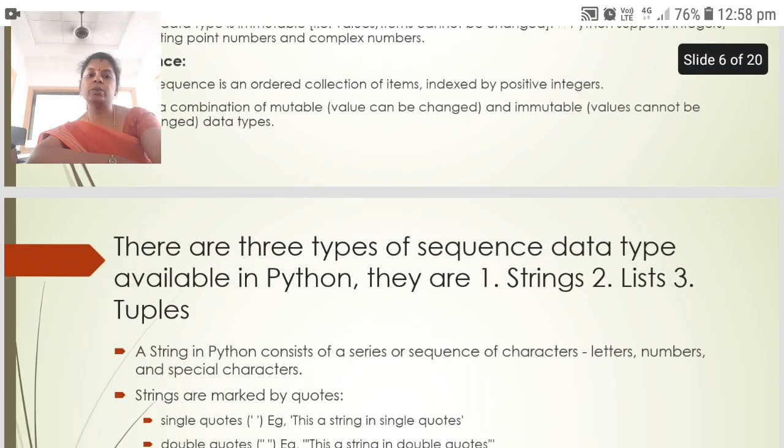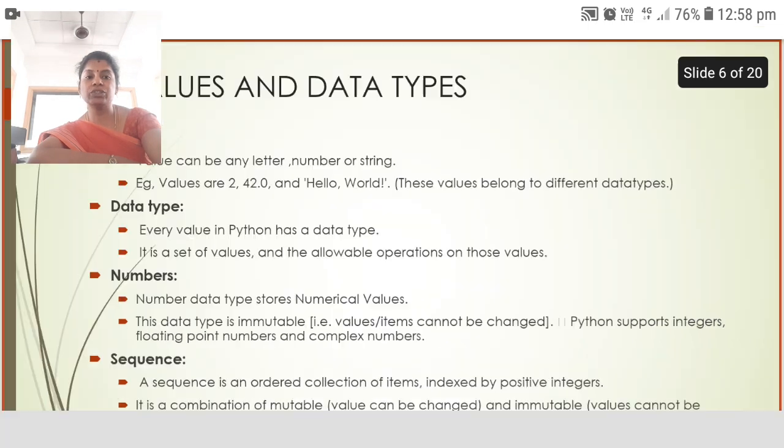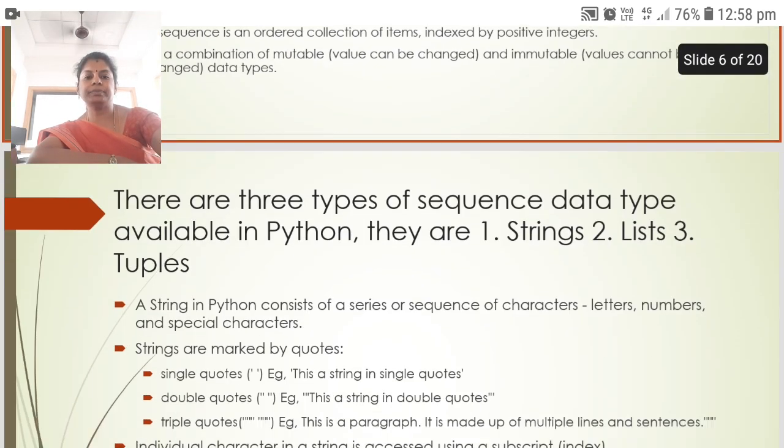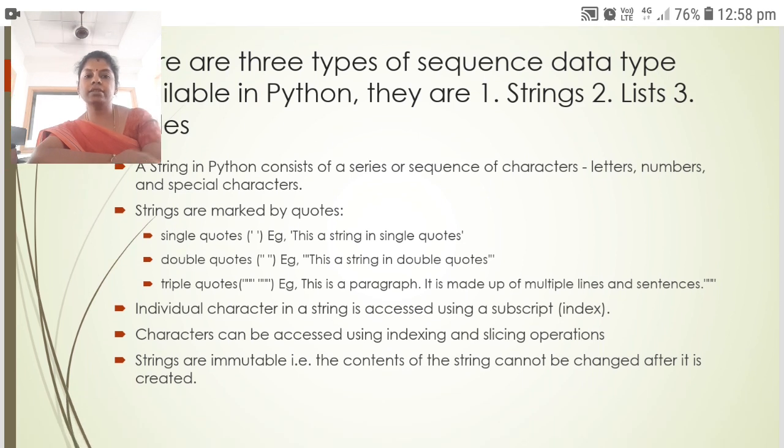There are three types of sequence data types available in Python. They are strings, lists and tuples. String in Python consists of series or sequence of characters: letters, numbers and special characters. Strings are marked by quotes: single quotes, double quotes and triple quotes. Individual characters in a string are accessed using a subscript. Characters can be accessed using indexing and slicing operators. Strings are immutable. That is, the contents of the string cannot be changed after it is created.